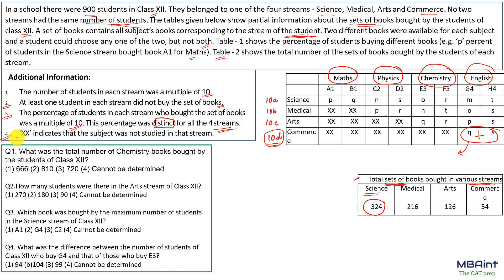A cross indicates the subject was not included in that stream. For commerce, maths, physics, and chemistry were not included — only English was included. Now let's look at each question and proceed accordingly.